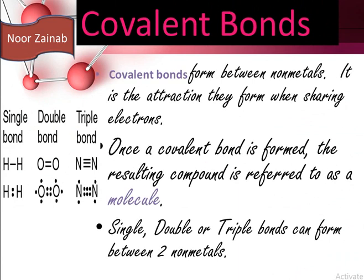Covalent bonds form between non-metals. It is the attraction formed when sharing electrons. Once a covalent bond is formed, the resulting compound is referred to as a molecule. Single, double, or triple bonds can form between two non-metals. A single bond is formed between two hydrogen atoms by sharing a pair of electrons. A double bond involves the sharing of two pairs of electrons — one pair contains two electrons.